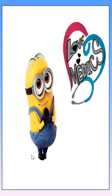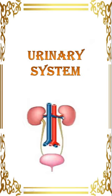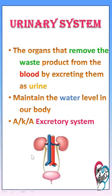Hi friends, welcome back to Lomadix. This lecture is on urinary system. A number of organs collectively called as a system — the organs that remove waste products as urine are called the urinary system. It maintains the water level in our body. It excretes the waste product, so it is also called as excretory system.